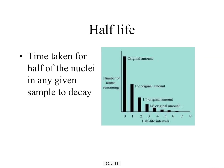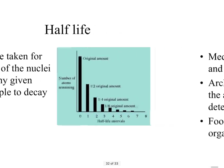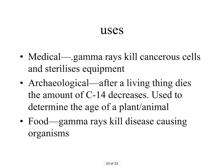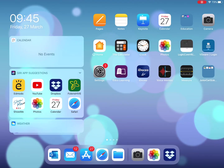Half-life is the time taken for half of a radioactive sample to decay. For example, say you have 100 atoms of americium. If the half-life is 30 years, after 30 years you'd have 50 atoms left. After another 30 years you'd have 25, and after another 30 years you'd have half of 25 — so after 90 years an eighth of the original amount remains. That's the half-life.